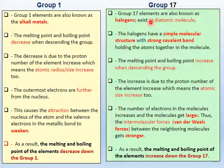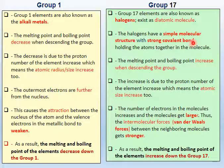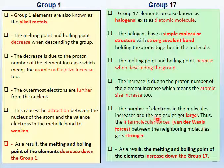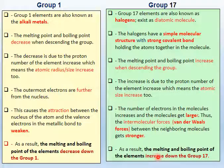For group 17, the concept is different. Group 17 elements are also known as halogens and exist as diatomic molecules. Halogens have a simple molecular structure with a strong covalent bond. The bonding of group 1 and group 17 is different. The melting point and boiling point increase when descending the group. This is due to the proton number increasing, which means the atomic size increases too. The number of electrons in the molecule increases and the molecule gets larger. Thus, the intermolecular forces — van der Waals forces — between neighboring molecules get stronger. As a result, the melting and boiling point of the elements increase down group 17.